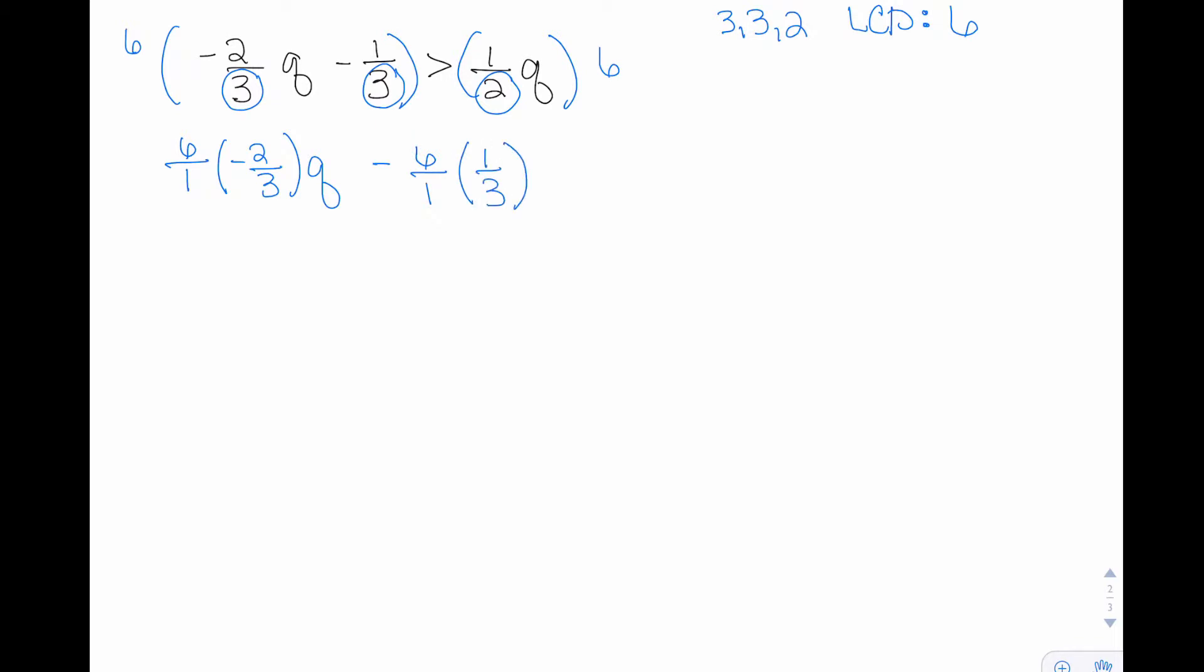I wrote it as six over one to help remind myself what's in the numerator versus the denominator. You should see the cancellation take place for each term in this case.